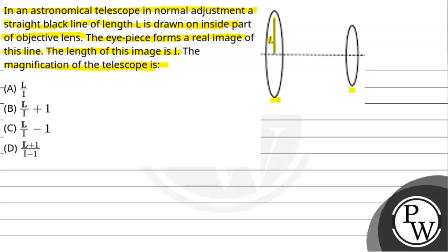We need to find what the magnification of the telescope will be. The image is forming here. By using the lens formula, we can write the key concept. Let's talk about the key concept, in which we'll see the lens formula.